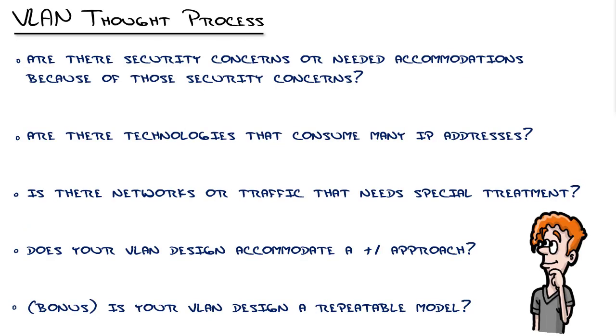That led us to ask these questions: Are there security concerns? Are there different things that consume a lot of IP addresses? Are there different networks that need special treatment? I mentioned at the beginning of this nugget that I was going to talk about how to name and number your VLANs.